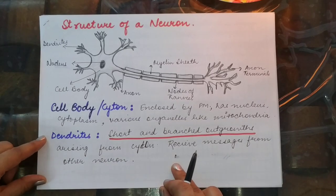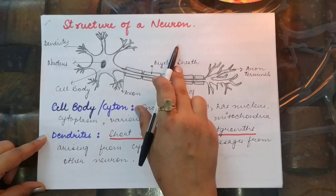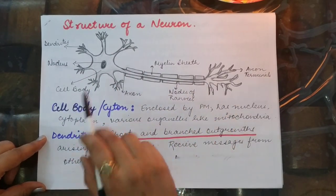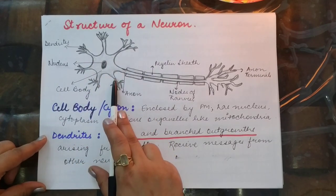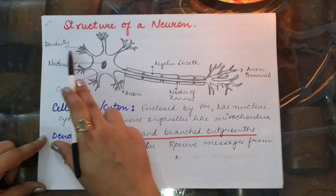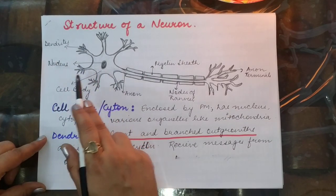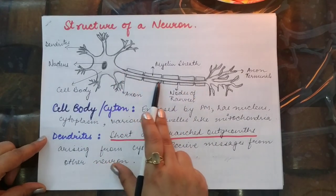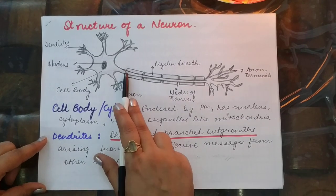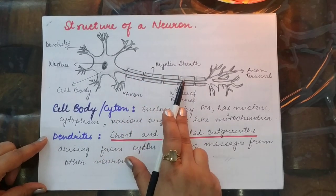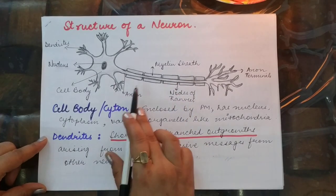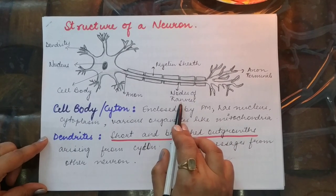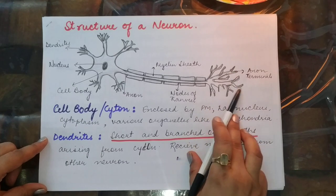Now let's revise the structure of a neuron. It is basically a long branched structure which has a big cytone, also called the cell body. The cytone has endings called dendrites and a prominent nucleus in the center. The cytone elongates into a fiber-like structure called the axon. The axon has a white-colored sheath called the myelin sheath. The spaces or interruptions between the myelin sheath are called nodes of Ranvier.